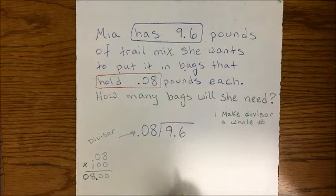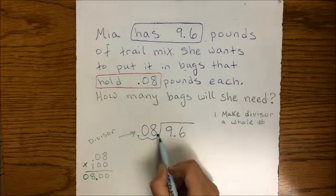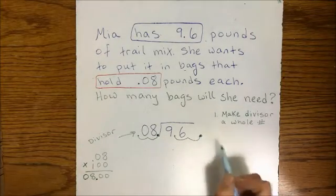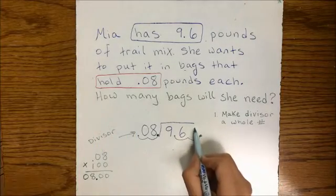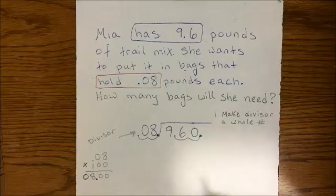The shortcut is to move the decimal two places over to make it a whole number and if we do that to the divisor we must do that to the dividend because math is fair like that and we can't do something to one number without doing it to the other.